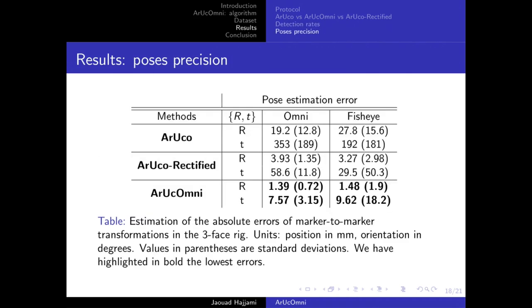In terms of pose estimation, AruCo Omni gets the smallest error. AruCo here is just for illustration purpose because the pose estimation is based on perspective projection and this is not adapted for panoramic images. Again, AruCo Omni outperforms the two methods with the lowest error in terms of orientation and translation for both catadioptric and fisheye images.